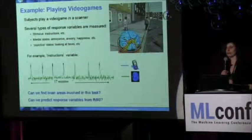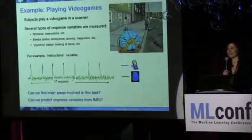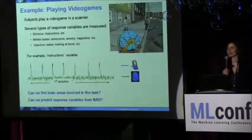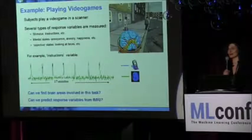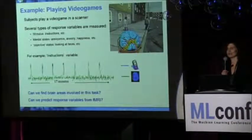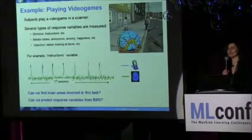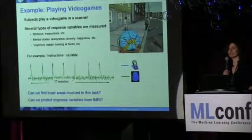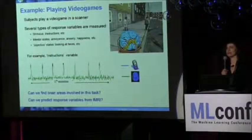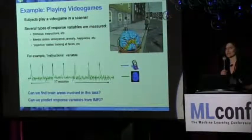Here is one example that's more fun — from an old PBIC data competition where grad students play video games in a scanner. Luckily it's fMRI, not PET; there is no ionizing radiation, so you can put as many students as you want. Things are measured during the game and after the game. You ask them how they felt — whether they were anxious, happy, or annoyed — and you can ask: what brain areas were involved in listening to instructions? Or can I predict when the instructions were on just by looking at the fMRI?